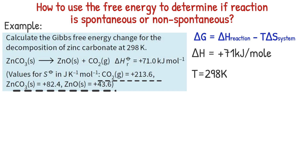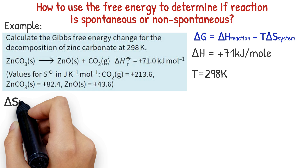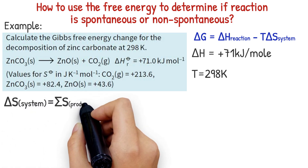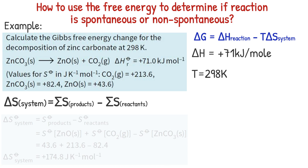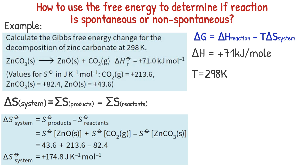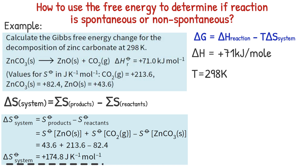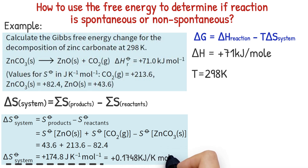Working out entropy changes for a reaction — our system — is very easy. You add up the entropies for everything you end up with in products, and take away the entropies of everything you started with in reactants. This is the simple equation for calculating entropy change of the system. The entropy change of the system for decomposition of zinc carbonate equals 174.8 joule per Kelvin per mole. The unit of free energy is kilojoule per Kelvin per mole, so we convert: this equals 0.1748 kilojoule per Kelvin per mole.